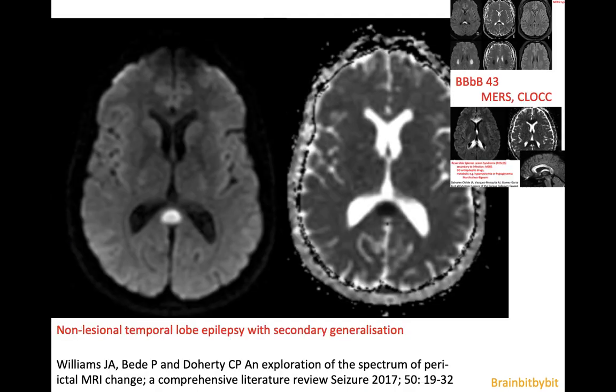Besides the local cortical changes, you can also see remote white matter changes in the post-ictal phase, such as diffusion abnormalities in the splenium of the corpus callosum, also related to glutamate, as explained in the brain bit by bit on reversible splenial lesion syndrome.